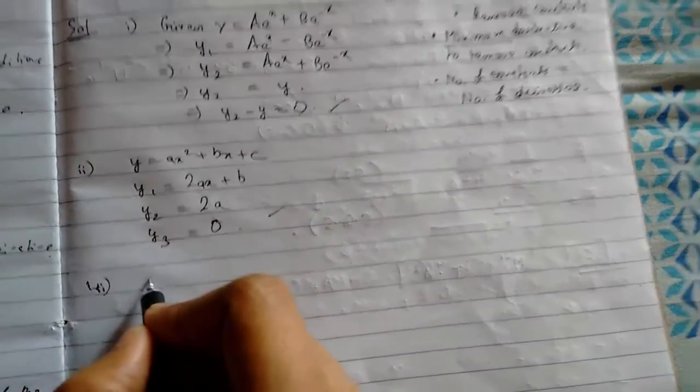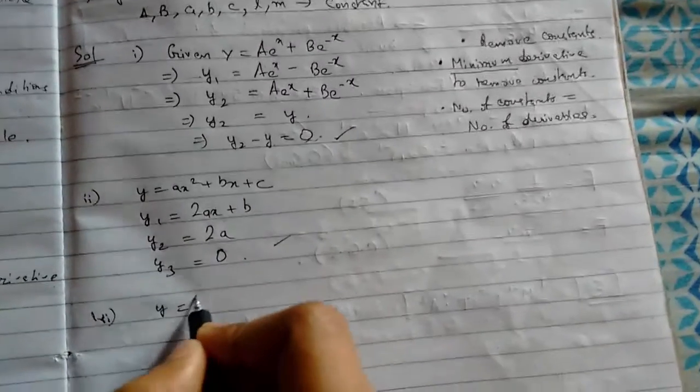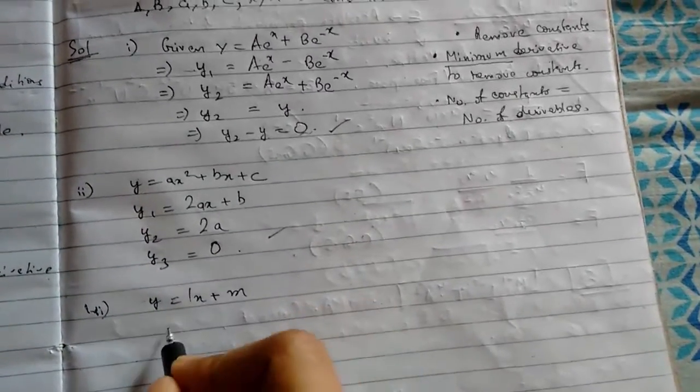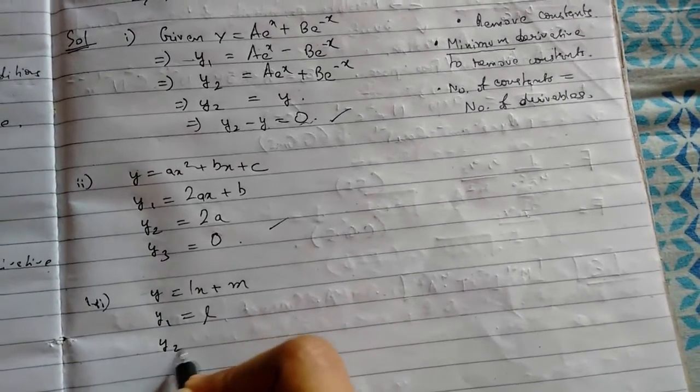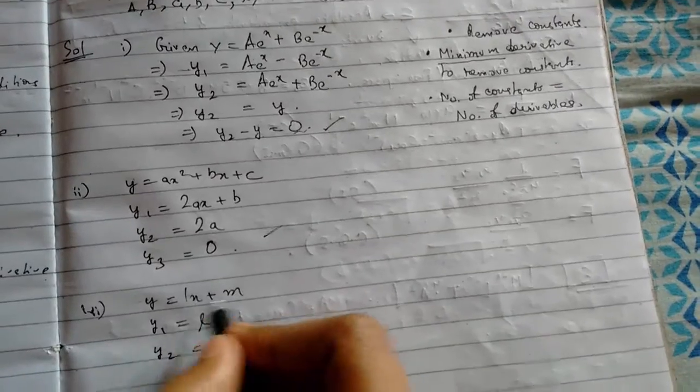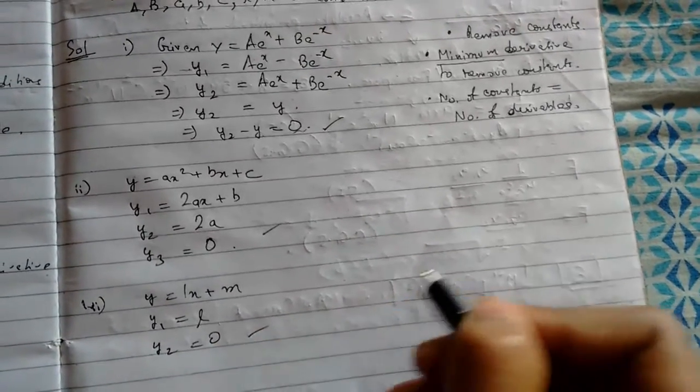So number three: y = lx + m. First we differentiate it: this will be l. y₂: this will be 0. Two constants, two derivatives. We have freed it from constants.